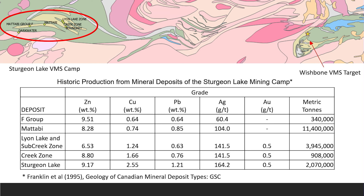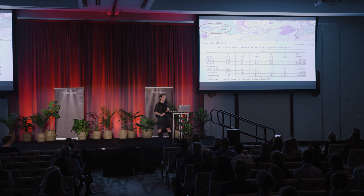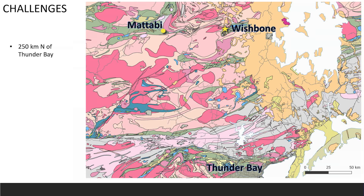When I zoomed out for a larger picture, my target is in the Obonga Lake Greenstone Belt. If you go straight west, you hit the Sturgeon Lake Greenstone Belt, which was host to five historic VMS deposits including the Matabi Mine, which produced over 11 million tons at 8% zinc. Talking with some of the regional geologists, these are very similar geologic environments and possibly related greenstone belts. At this point I was really excited about this target and was ready to hit the ground.